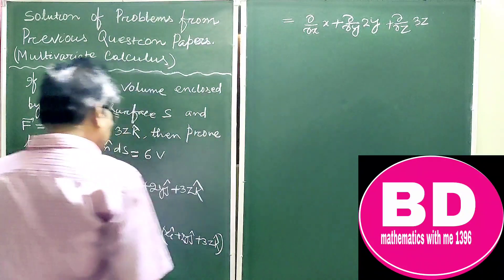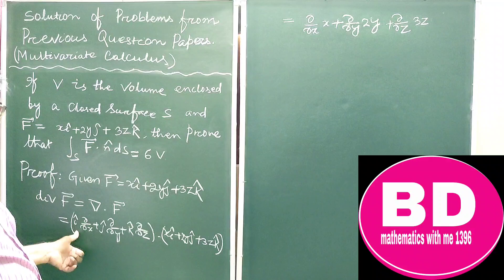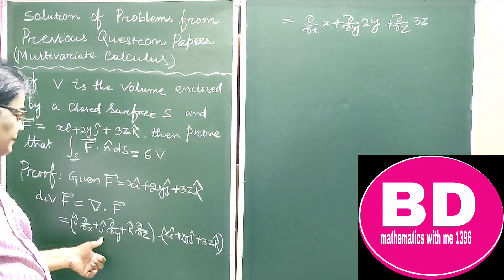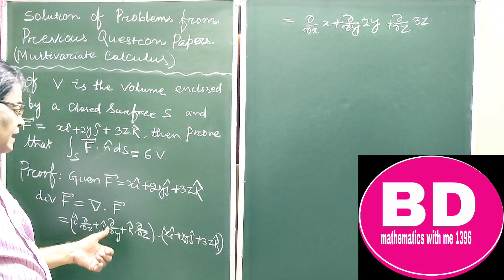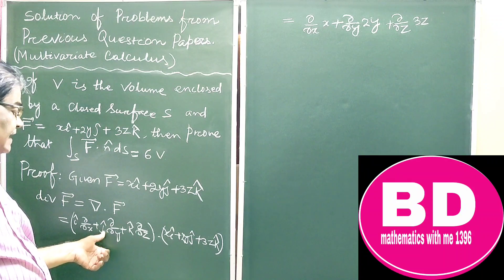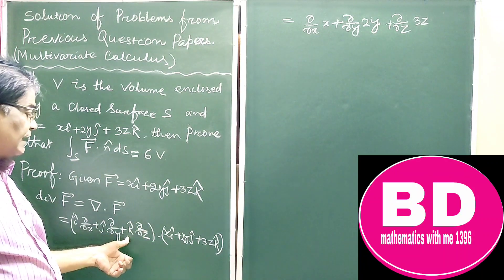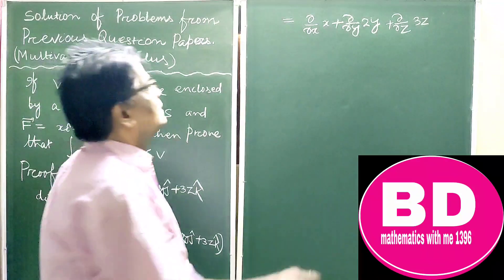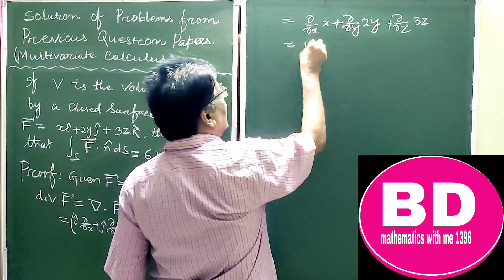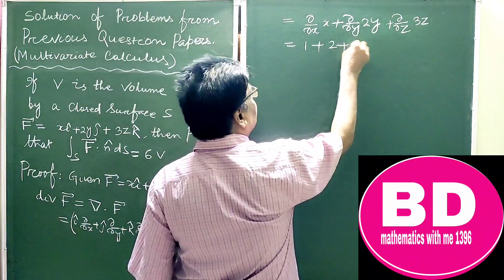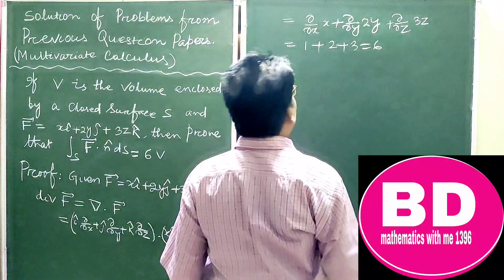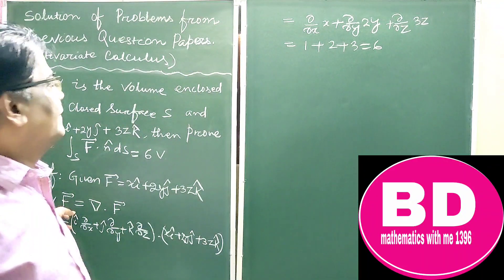So you know i cap dot i cap is 1, i cap dot j cap is 0, i cap dot k cap is 0. Similarly j cap dot j cap is 1, k cap dot k cap is 1. So this is equal to 1 plus 2 plus 3, which equals 6. So we get the value of divergence of F as 6.